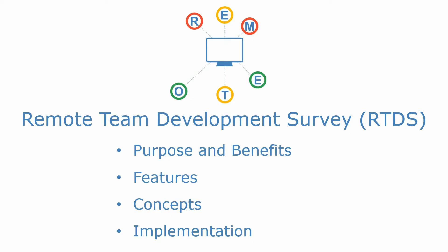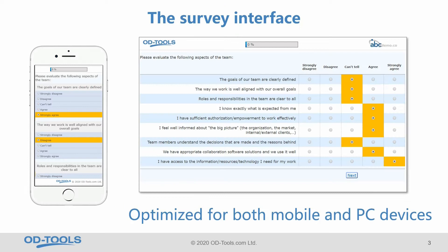Here you can see examples of the survey interface on mobile phone and on desktop. The survey consists of 45 Likert-type items. For example, the first question: the goals of our team are clearly defined, and people need to rate this. If they strongly disagree or disagree, we call that a critical response. If they select the mid option — can't tell — we call that a neutral response. And if they agree or strongly agree, we call that a favorable or positive response.